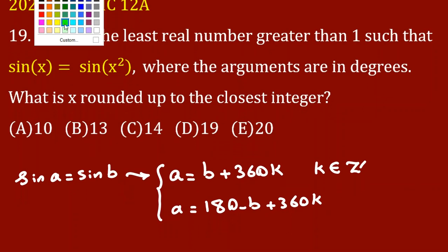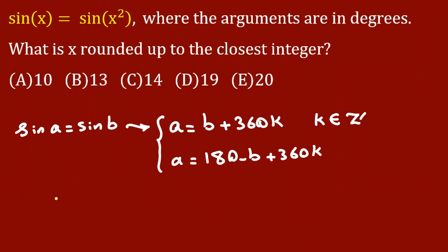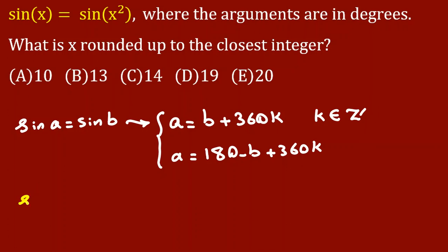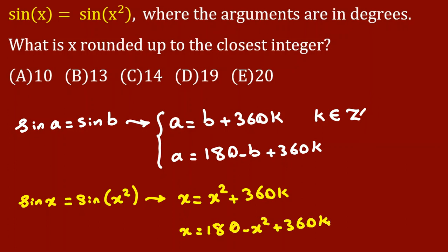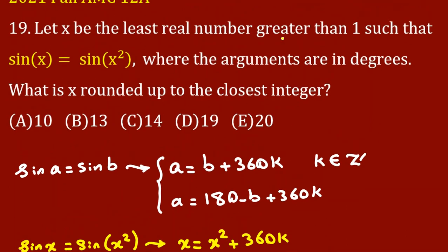Let's solve this problem. If we use this point, sin(x) equals sin(x²). We can conclude x equals x² plus 360k, and for the next one, x equals 180 minus x² plus 360k. The problem says x is the least real number greater than 1.